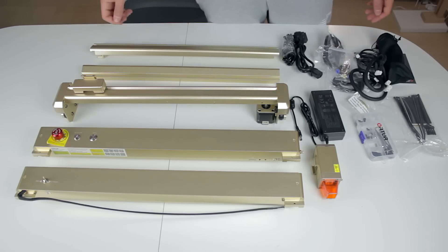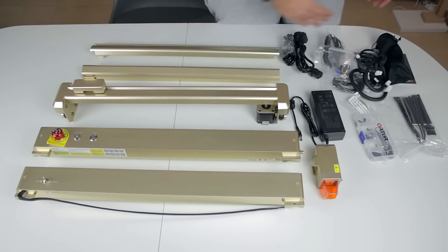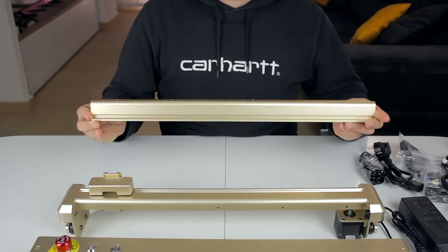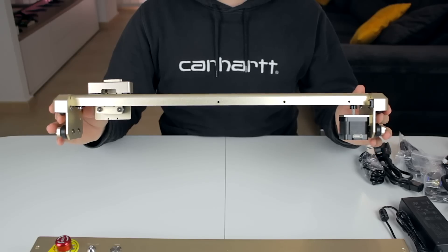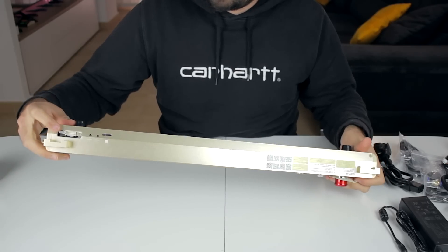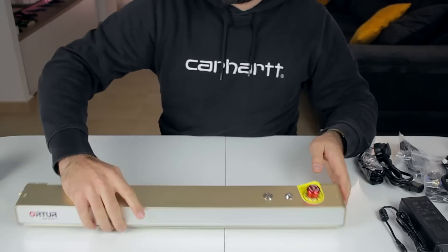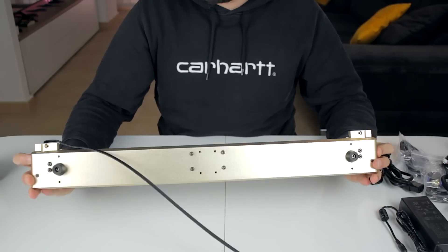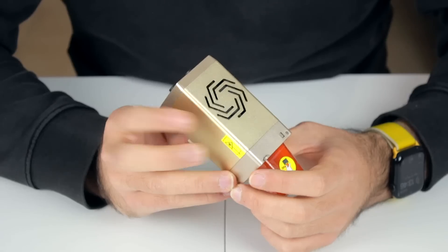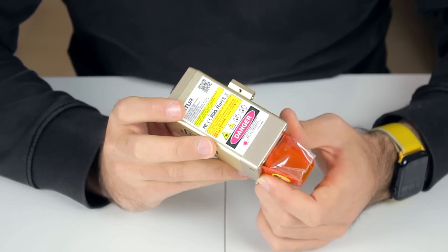Here we have every single component we unboxed, and now we are going to have a closer look at them. Starting with the metallic profiles, here we have the two sides, the X-axis gantry that comes fully preassembled with the carriage. This must be the front profile of the machine with all the buttons and electronics. And finally, we have the back section of the frame that has a switch here.